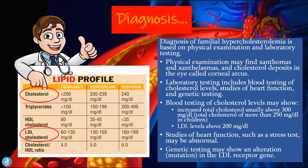The three gene mutations which can occur are the LDLR receptor gene mutation, the APOB receptor gene mutation, and the PCSK9 gene mutation.